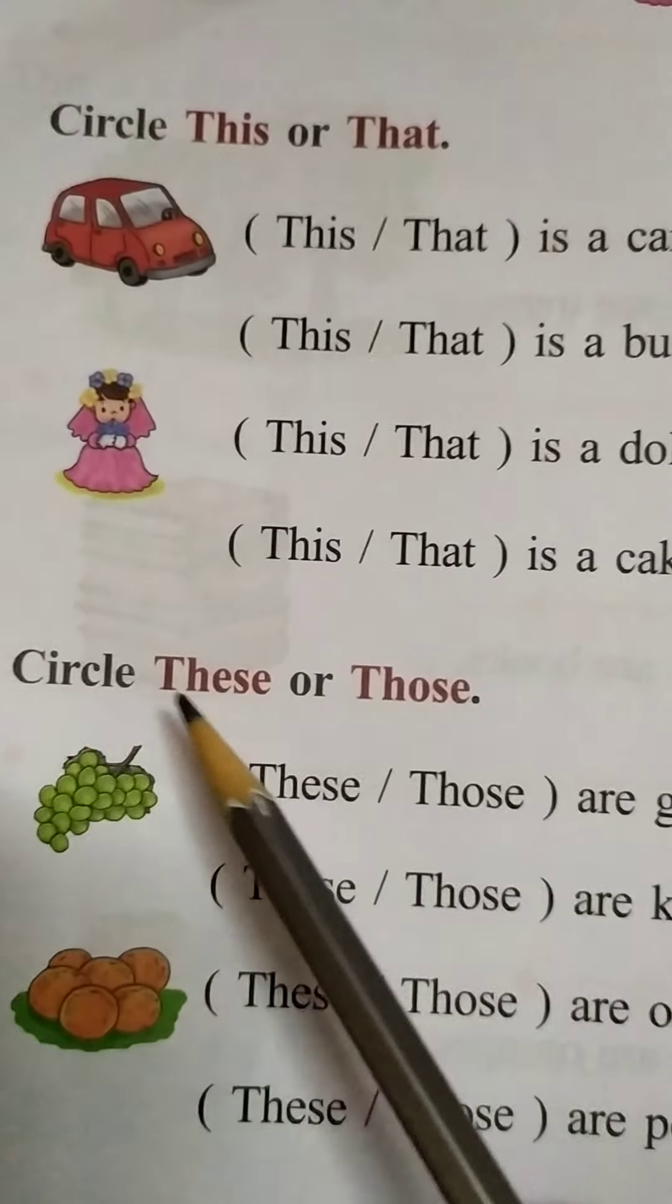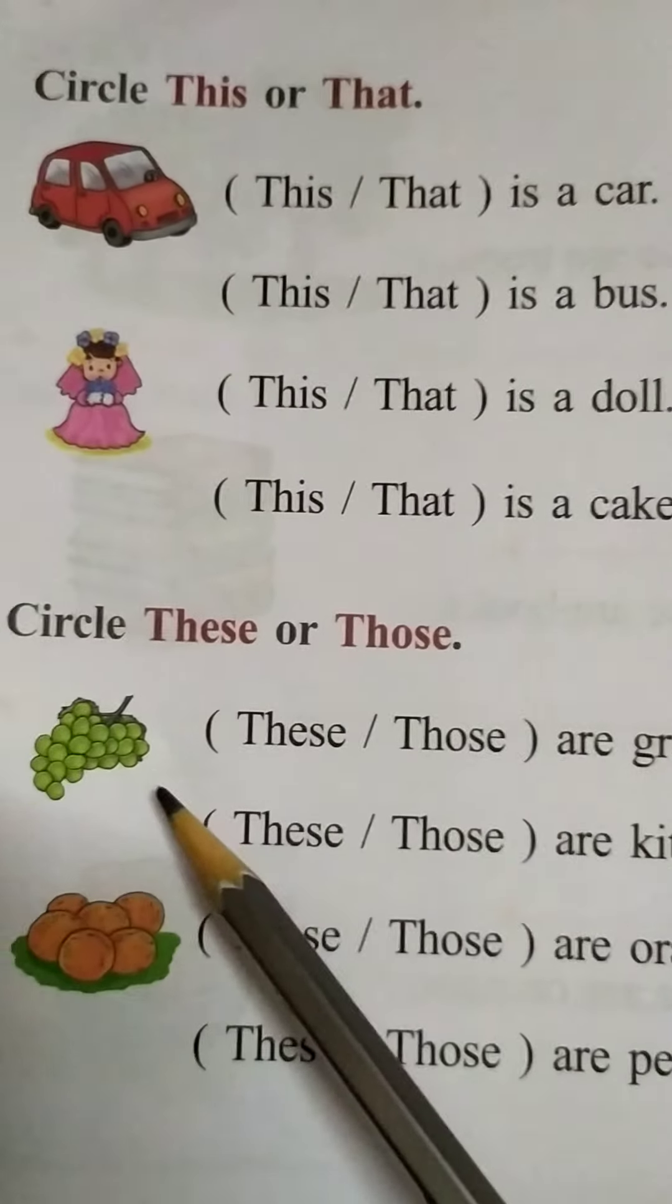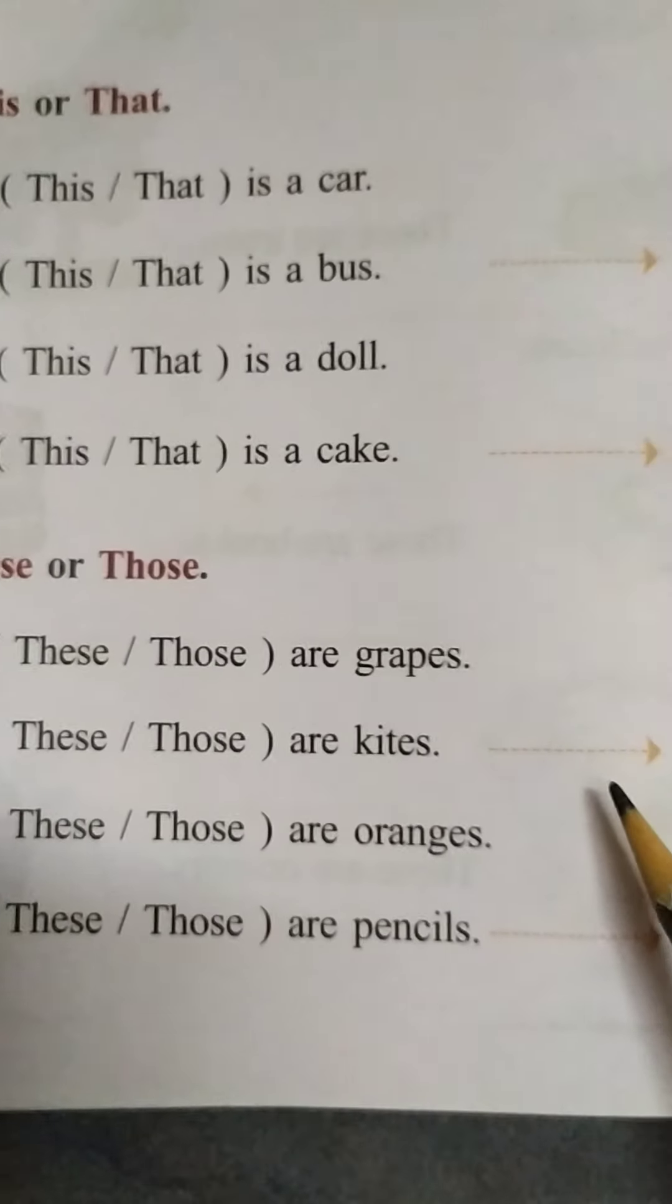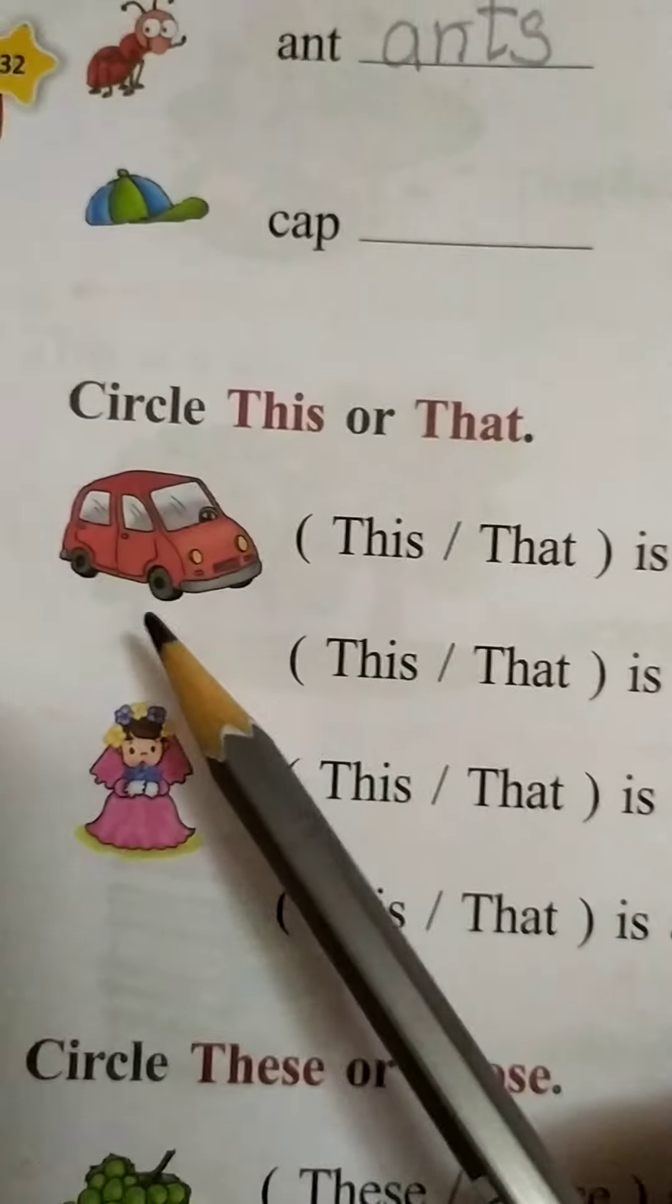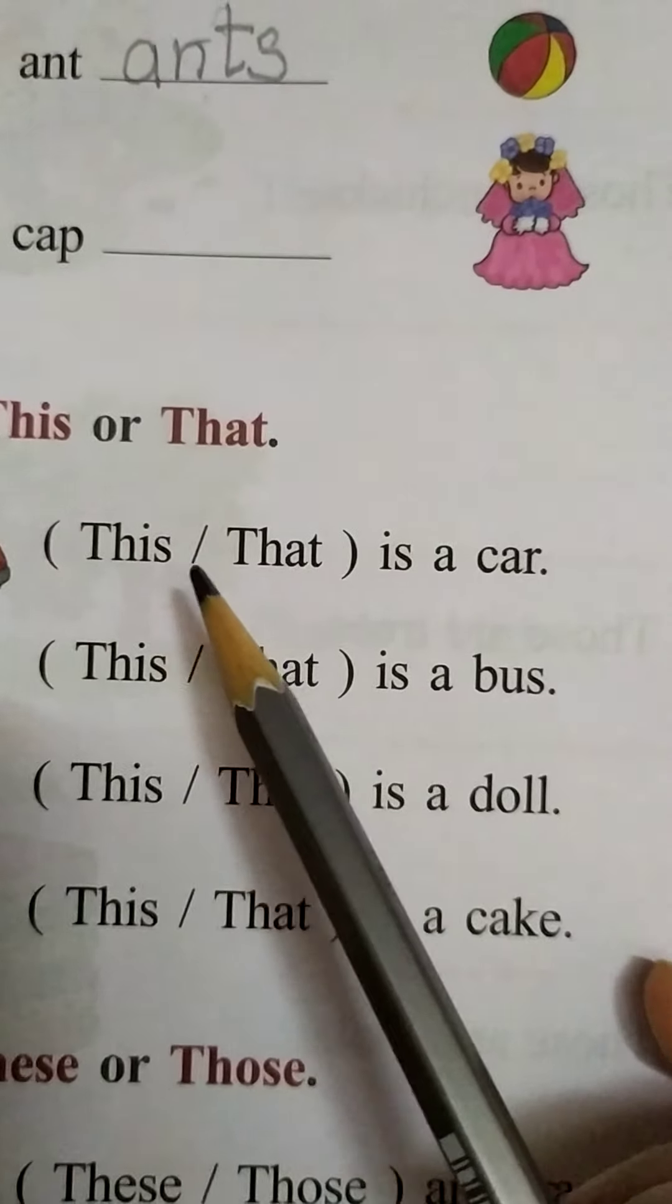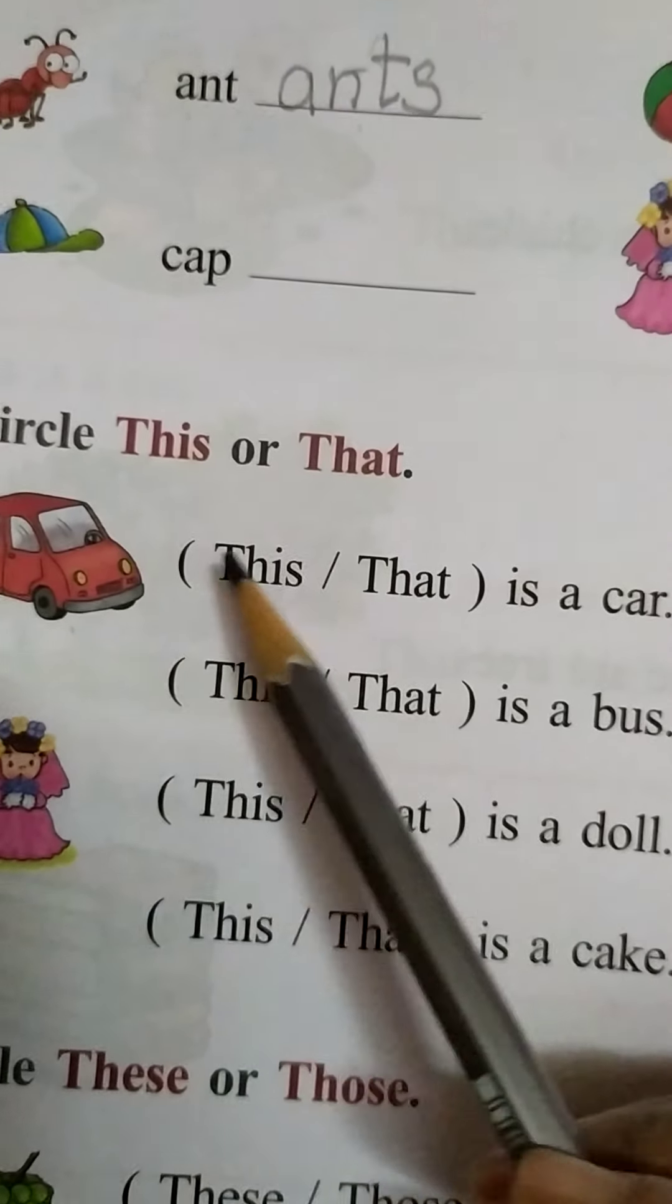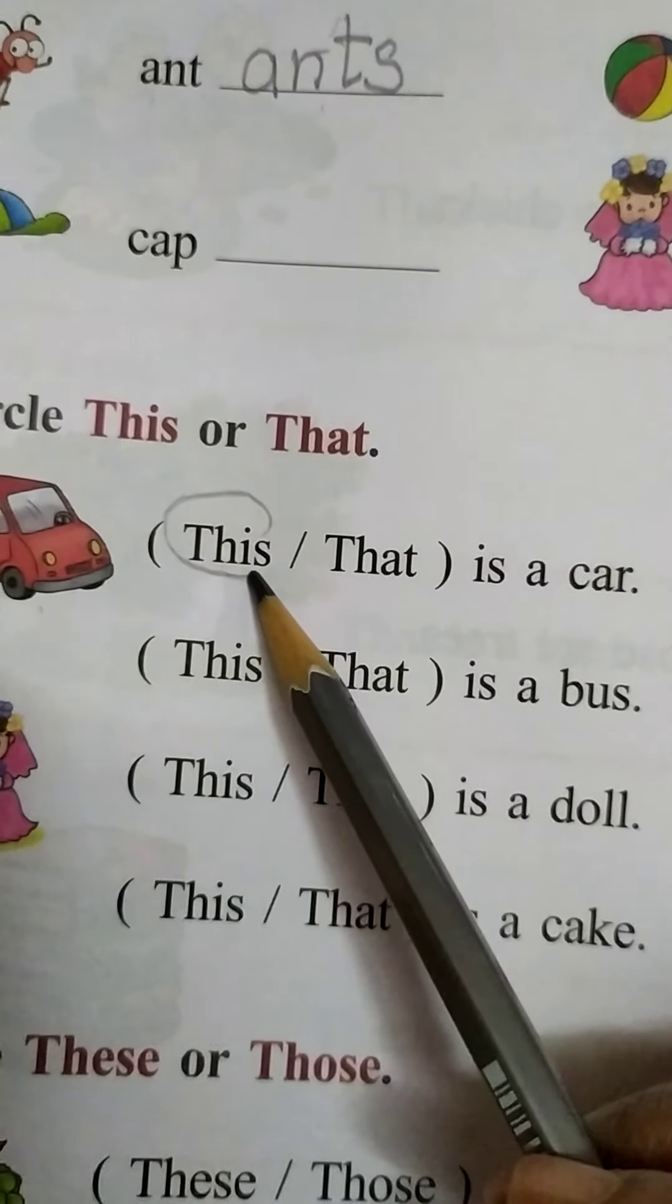Here, circle these or those. Here the things are given children, both the sides. So, which is correct one? You need to circle. Here, first one I will explain. This or that is a car. Here children, this. Here they are near to us. So, you need to circle this one.